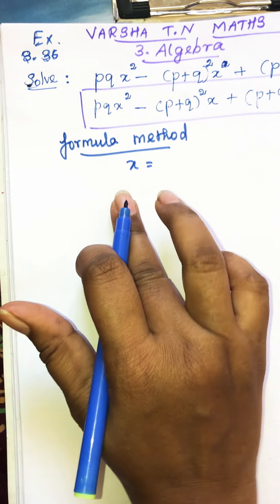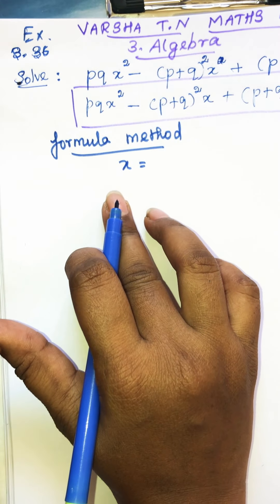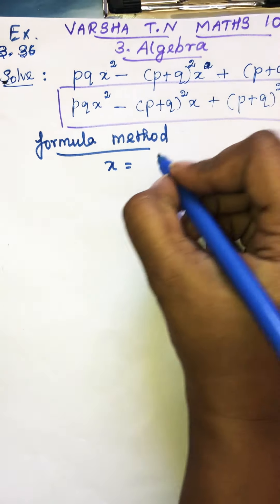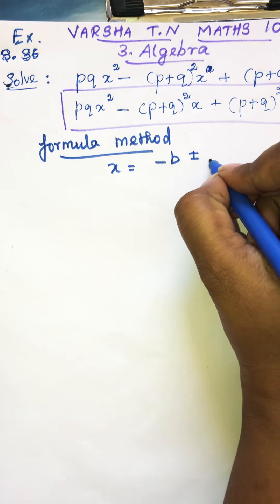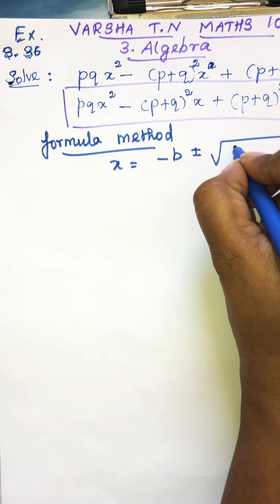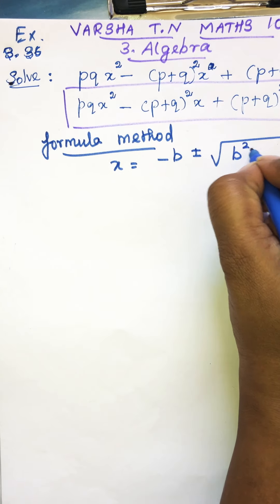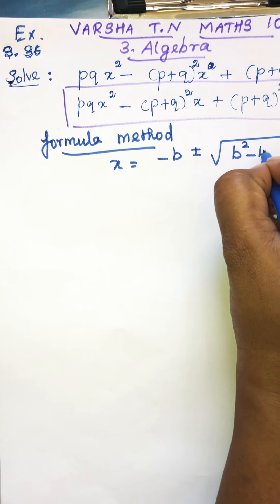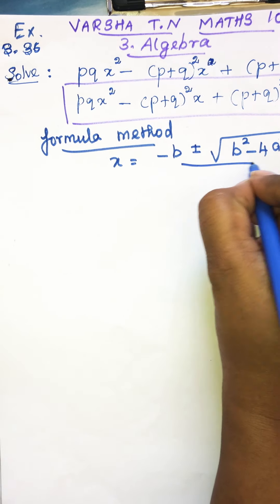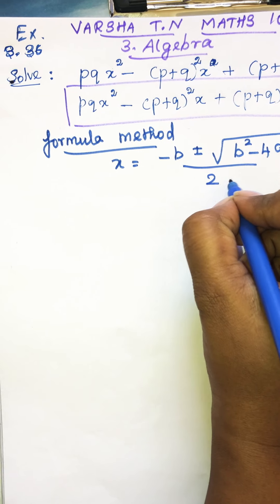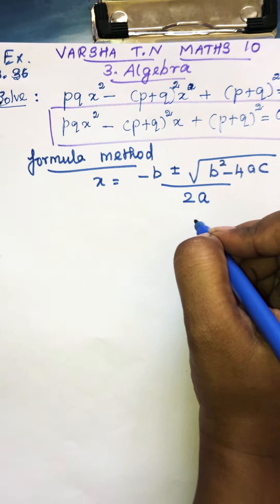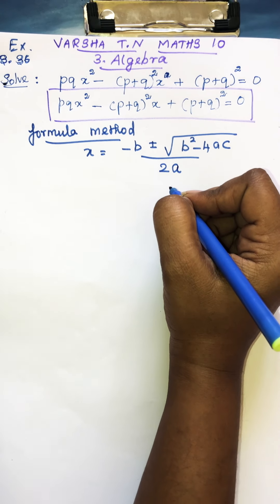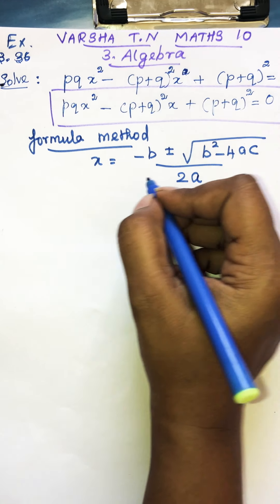So what is the formula to find the value of x? Tell me students — that is: x equals minus b plus or minus root of b squared minus 4ac, all divided by 2a. This is our formula to find the value of x.